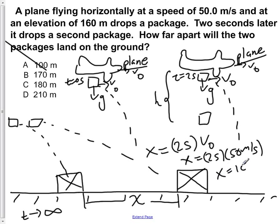In terms of the first crate, it will go an extra 100 meters away. So our answer for this question is A. The distance between the packages when they land on the ground is 100 meters.